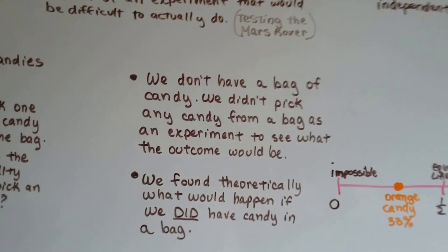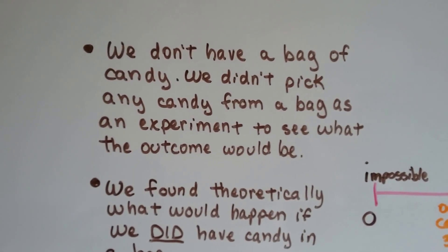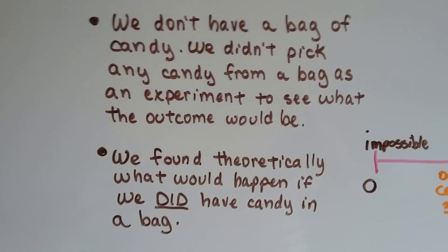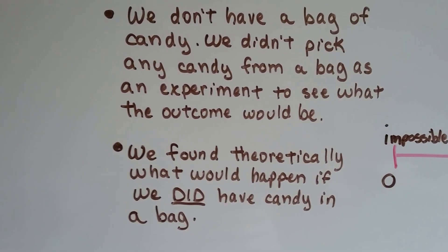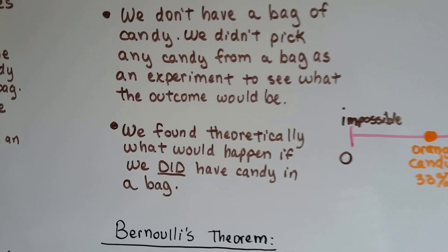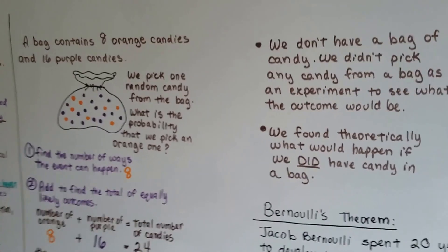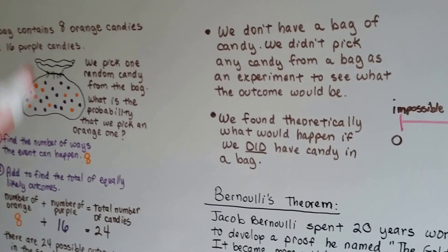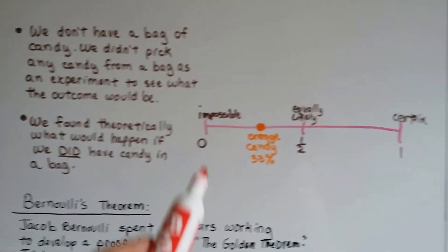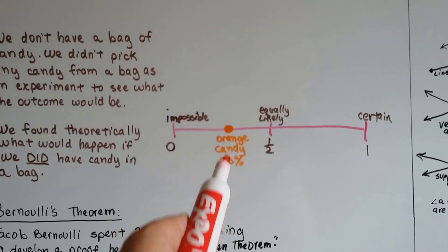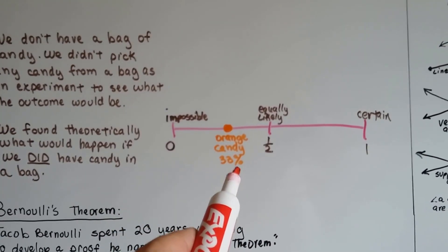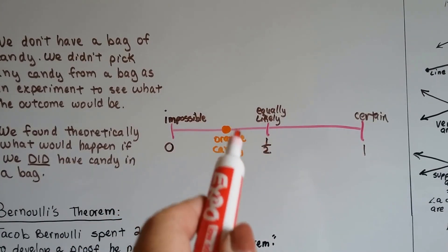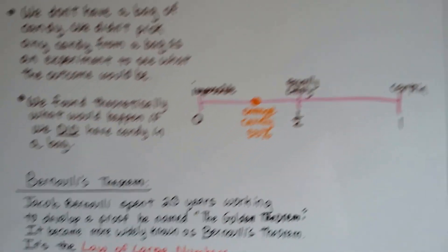Now, we don't have a bag of candy, and we didn't pick any candy from a bag as an experiment to see what the outcome would be. We found, theoretically, what would happen if we did have candy in a bag. That's theoretical probability. It would have been experimental probability if we actually had the bag of candy and actually tried taking them out to see what would happen and kept tally marks of our picks. It ended up being 33% chance of getting an orange candy, so on our number line here from impossible 0 to certain 1, it falls about a third of the way.